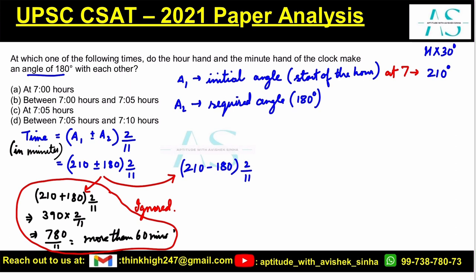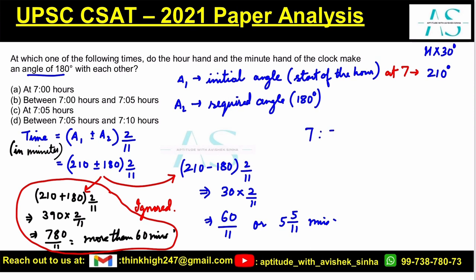Now let's solve the valid solution. We have (210 − 180) × 2/11 = 30 × 2/11 = 60/11, which is 5 and 5/11 minutes. The time also comes in minutes from this formula, so the required time is 7 hours and 5 and 5/11 minutes.